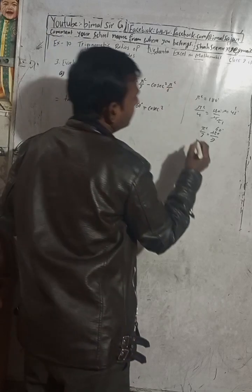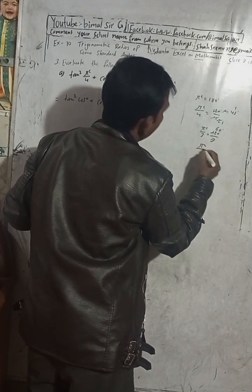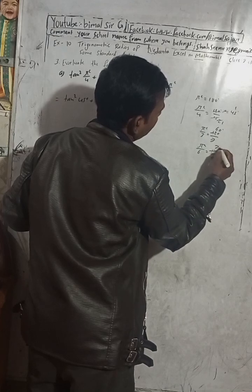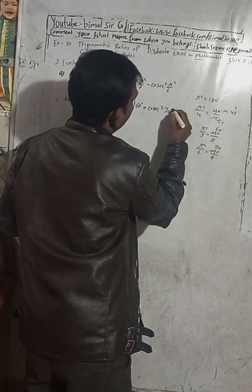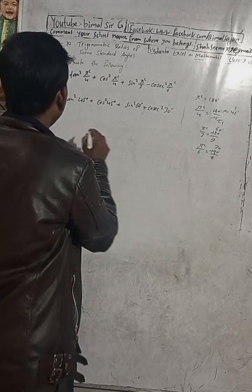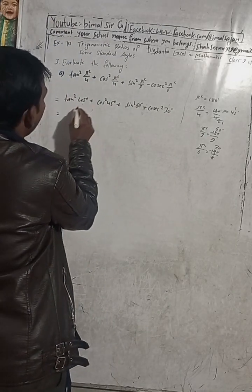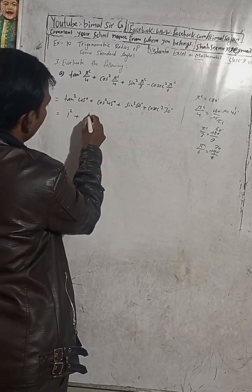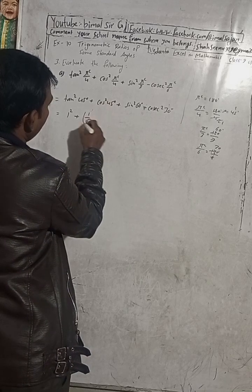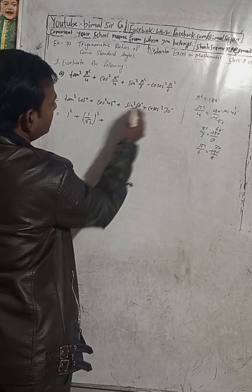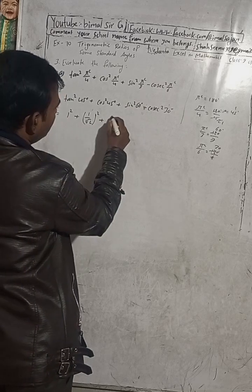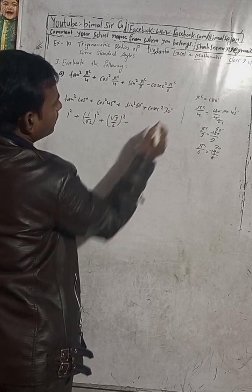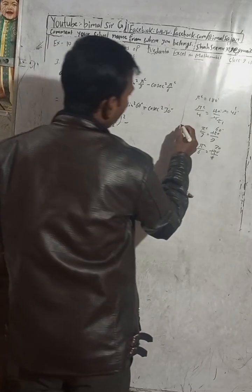And π/6 means 180 degrees divided by 6, which equals 30 degrees. Now substituting values: tan(45°) = 1, so 1² = 1. Plus cos(45°) = 1/√2, so (1/√2)². Plus sin(60°) = √3/2, so (√3/2)². Minus cos(30°) — for cos(30°) we need to know the value.